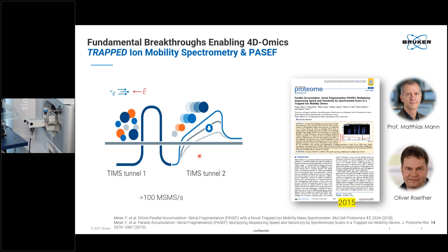The system we have here today actually has two TIMS tunnels. The first TIMS analyzer is used for accumulation, and then we very quickly transfer ions through to a second TIMS tunnel where they are separated based on ion mobility and eluted in order of decreasing collisional cross section. We collaborated closely with Professor Matthias Mann and his group at the Max Planck Institute to develop this concept, which we call parallel accumulation serial fragmentation — PASEF. We accumulate ions while eluting and fragmenting them in series, enabling us to do in excess of 100 MS/MS spectra per second.